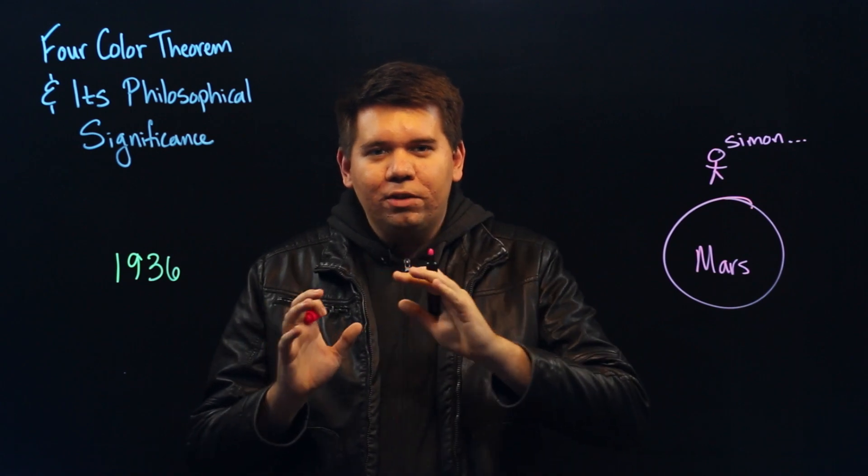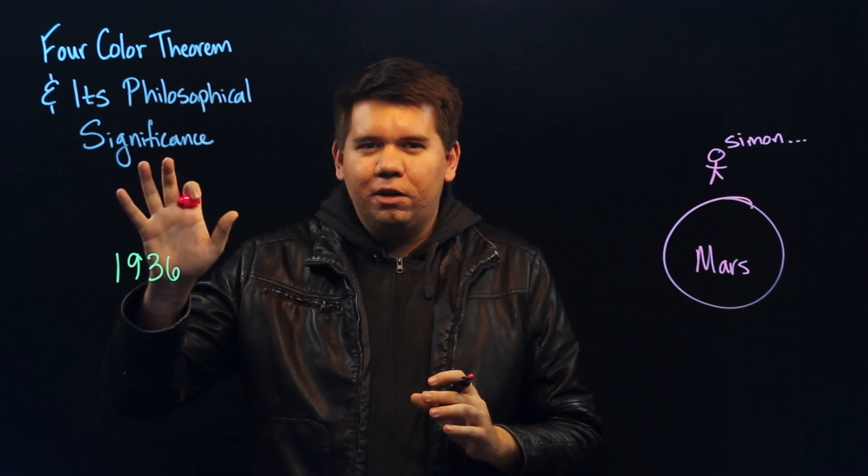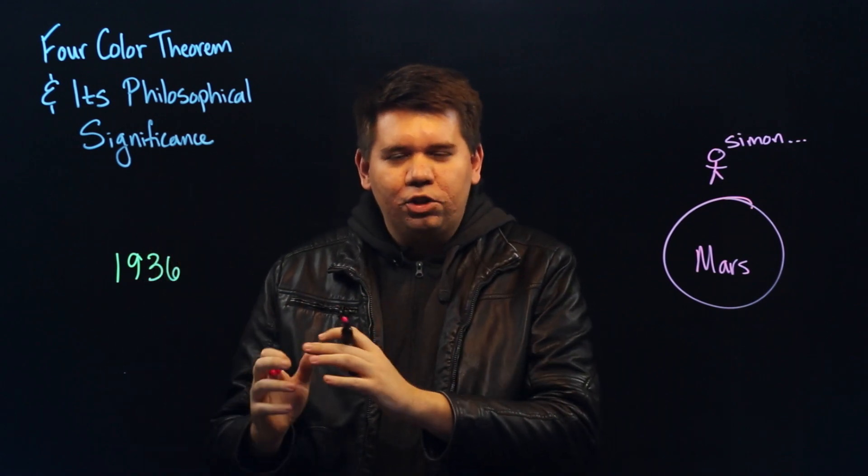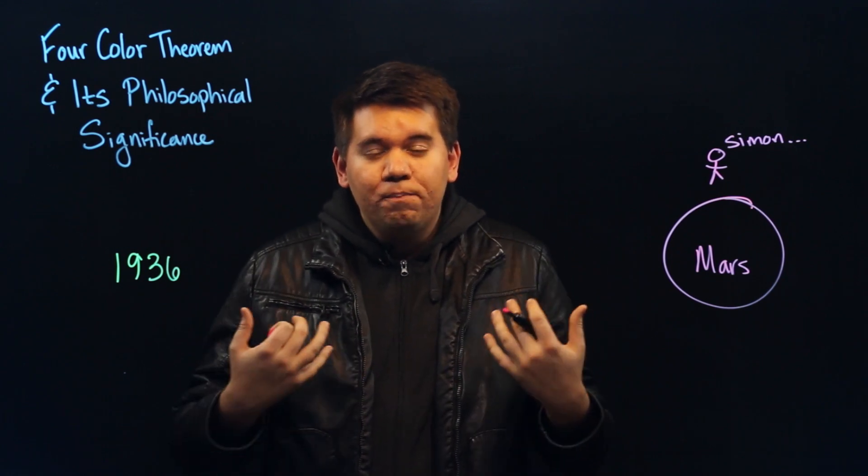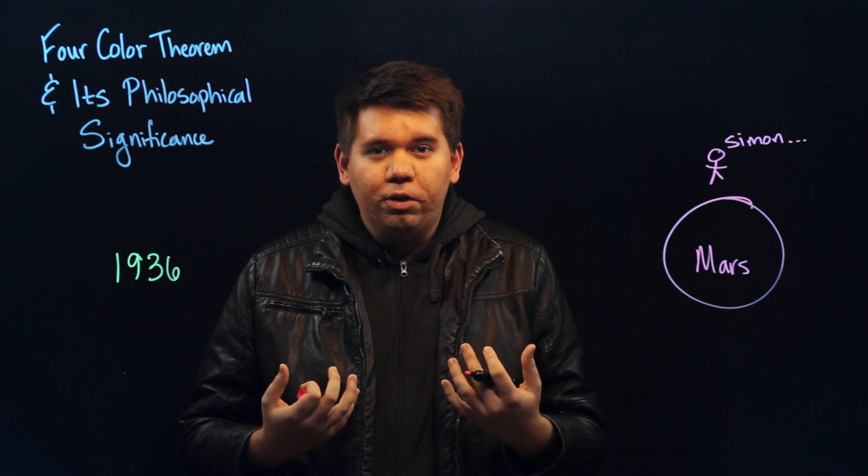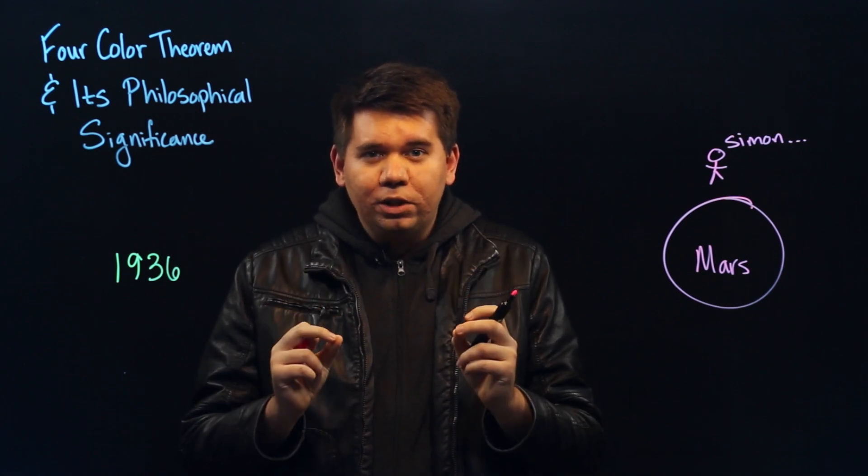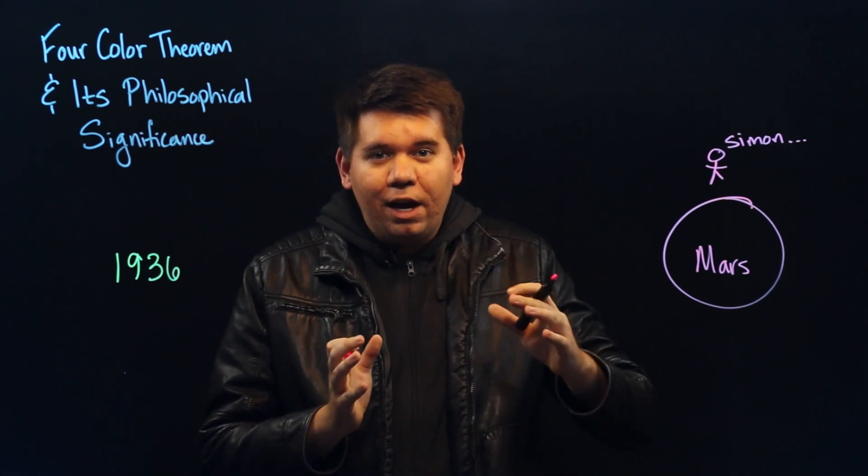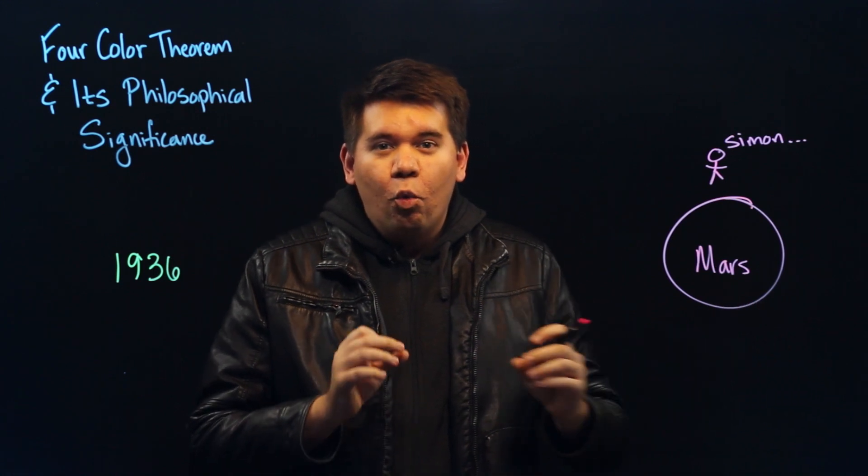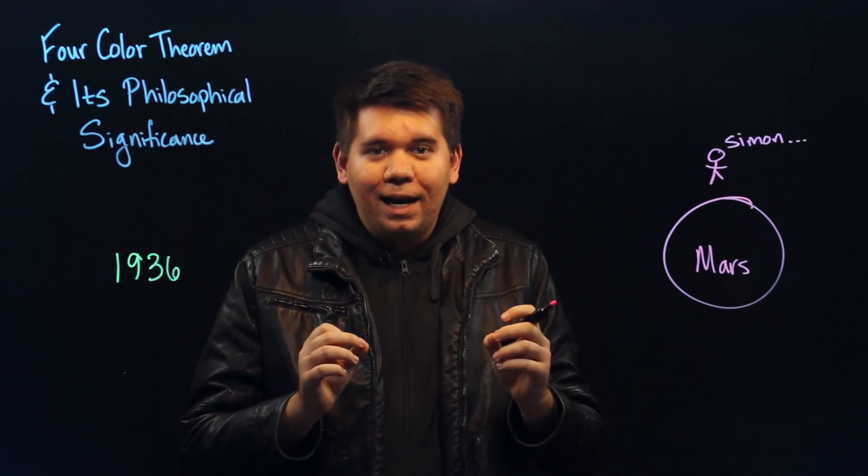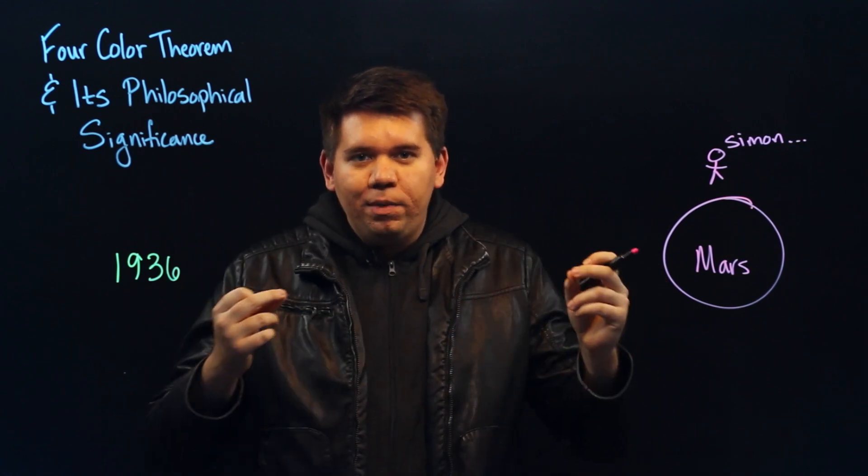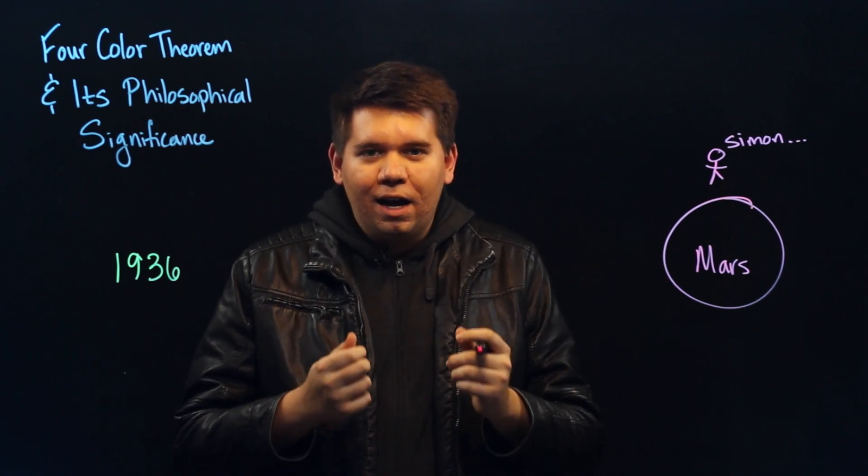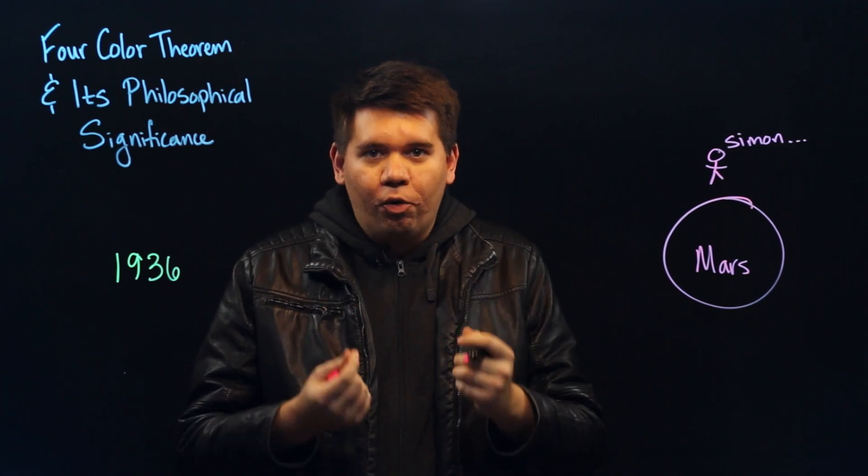See, it doesn't seem like the computer assistant role in the four-color theorem really fundamentally changed the nature of mathematics. After all, today, mathematicians are pretty comfortable using computers in their proofs. But it does raise the question that as we move into an era of artificial intelligence, what will constitute mathematics in this new era? Will mathematics continue to be a distinctly human activity? Or will it take on a new shape, a new form?